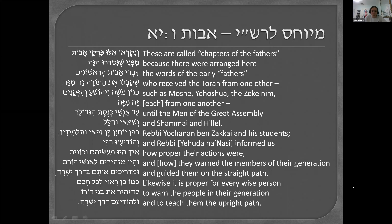These are called chapters of the fathers because they were arranged here — the words of the early fathers who received the Torah from one another, such as Moshe, Joshua, the Zekinim, each from one another, until the men of the great assembly and Shammai and Hillel, Rabbi Yochanan ben Zakkai and his students, and Rabbi Yehuda HaNasi informed us how proper their actions were and how they warned and guided their generation on the straight path. Likewise, it is proper for every wise person to warn the people in their generation and teach them the upright path.